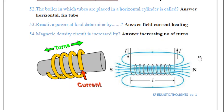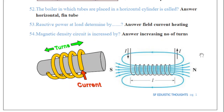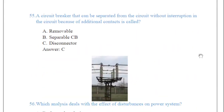As the current flows, the magnetic density also increases. The third way to increase magnetic density is to use soft iron as a core. If we use soft iron as a core, it will also affect the magnetic density. The fourth way is to increase the cross-section area of the solenoid. If we increase its cross-section area, it will also affect the magnetic density.